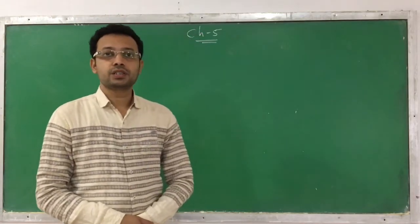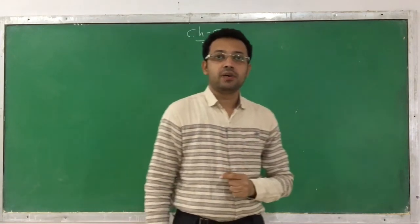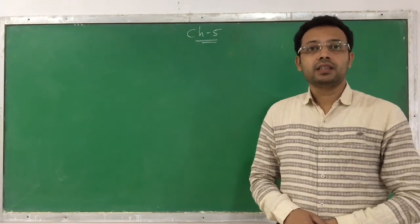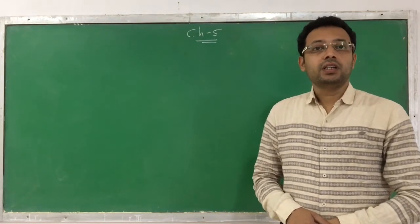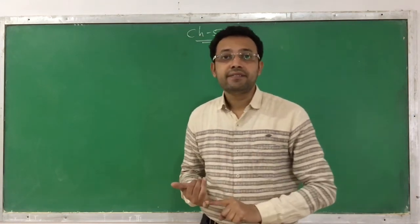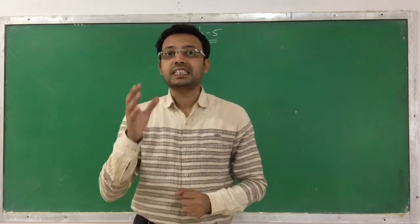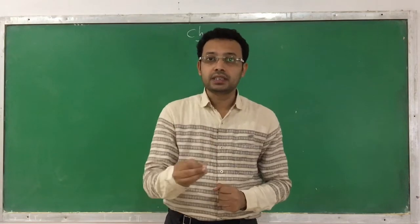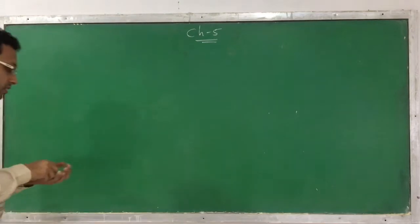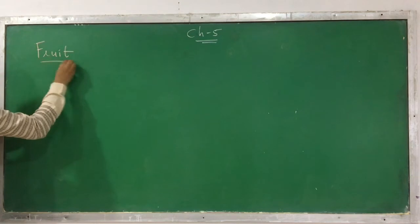Welcome back dear students and friends. We were discussing Chapter 5, Morphology of Flowering Plants. Till now we have discussed the different organs of a flowering plant like root, stem, leaf, and flower. Today we have to learn about the fruit and the seed, so we will discuss both topics in this session.